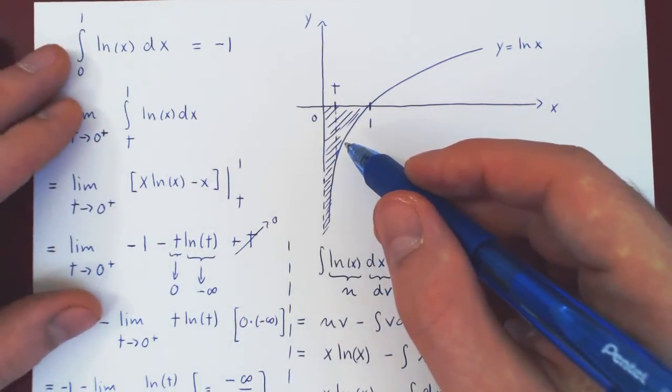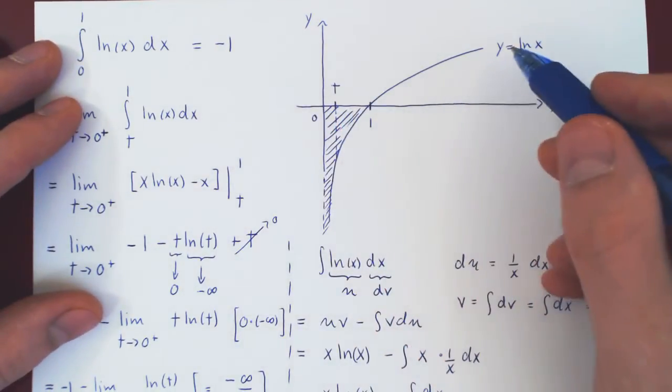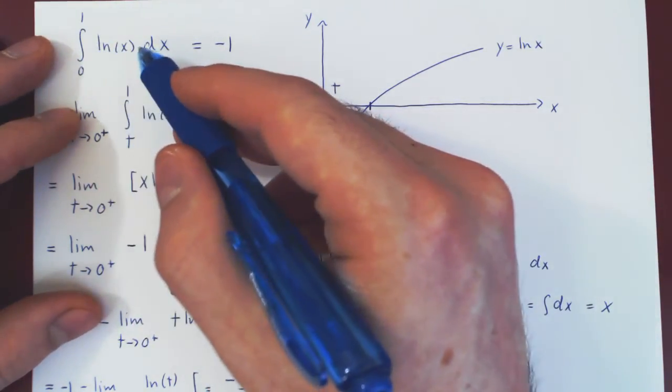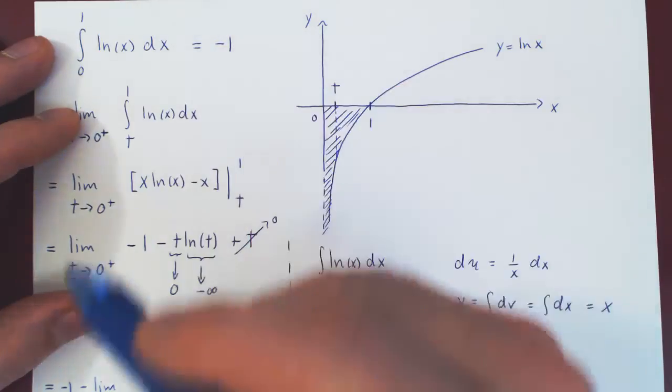And you can think of this in terms of area, right? Between 0 and 1, as ln of x is negative, the integral from 0 to 1 of ln of x will return the negative of the area of the region.